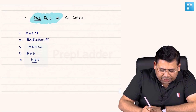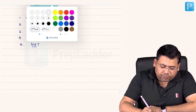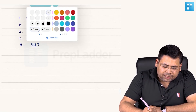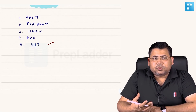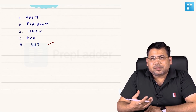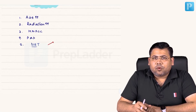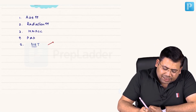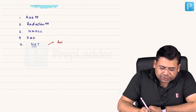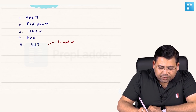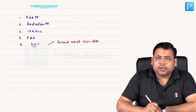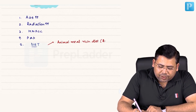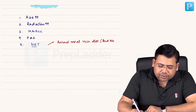What in diet is very important? Earlier people used to say vegan diet is protective — no, not at all. It has been seen that animal meat-rich diet is associated with increased risk. Basically, it is red meat — like mutton, not chicken.